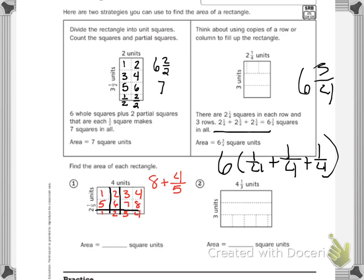So if I zoom out, my area is eight and four fifths square units.